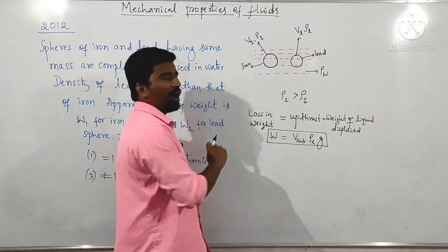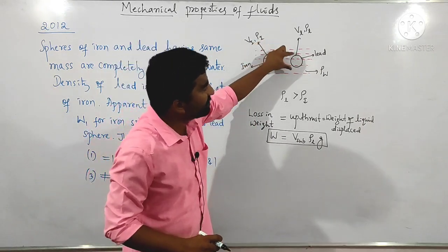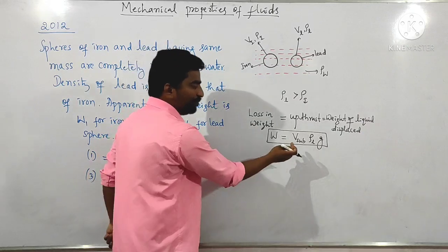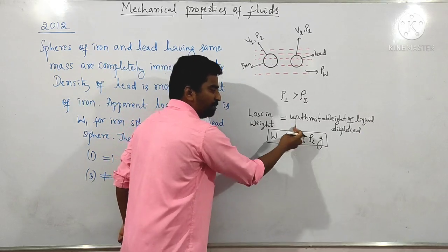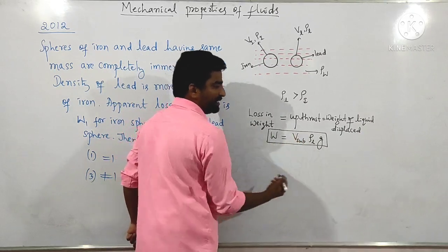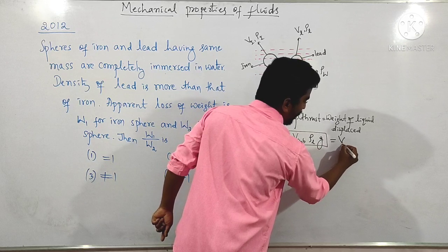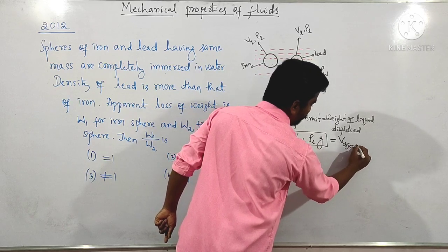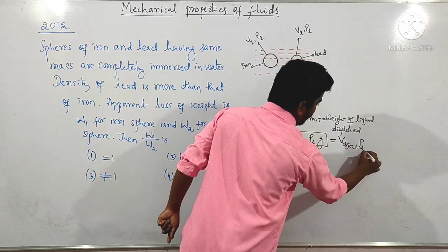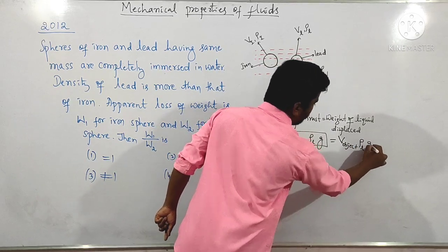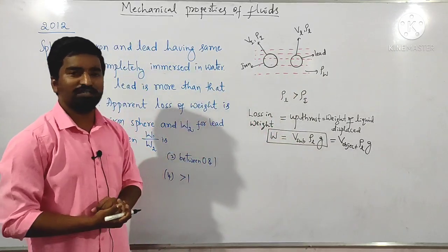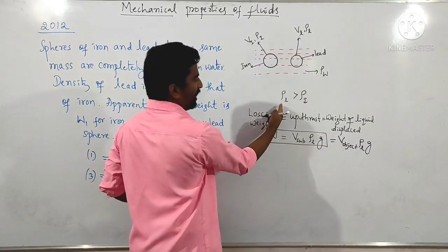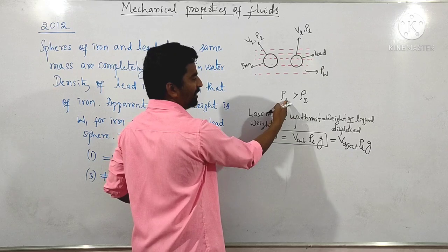Whenever the object is completely immersed in water, you should take the volume of the submerged object as nothing but the volume of the object, multiplied by the density of the liquid, multiplied by g. This is the first case of analysis — that is for W1.